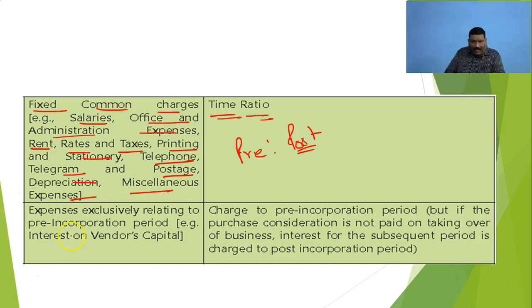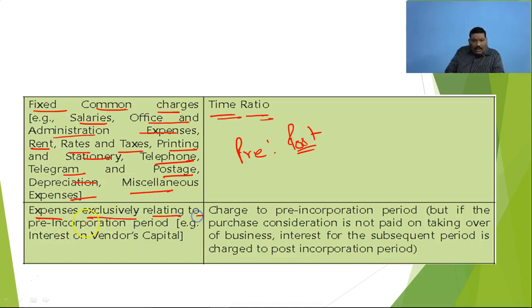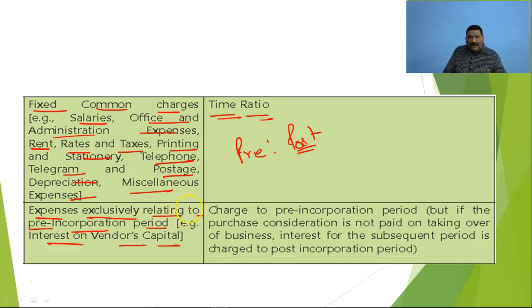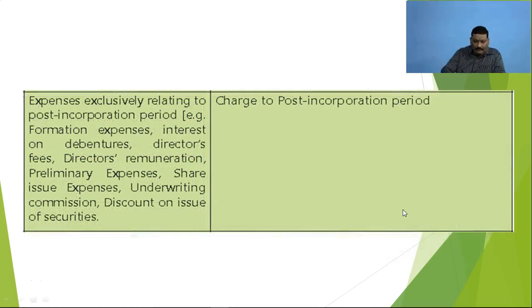After that, we have a special item — expenses exclusively related to the pre-incorporation period, such as interest on vendor's capital. As I have told you earlier, there are certain items which exclusively belong to the pre-period such as interest on vendor's capital. These items will definitely be covered in the pre-period with no choice — we have to charge them to the pre-incorporation period.